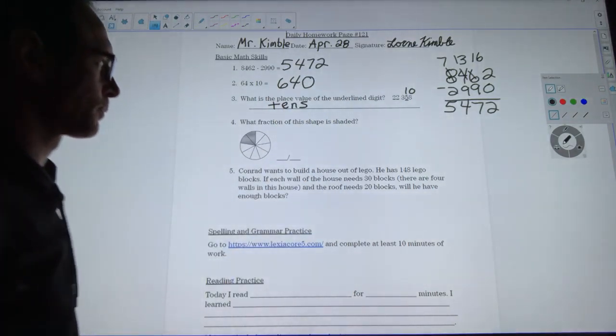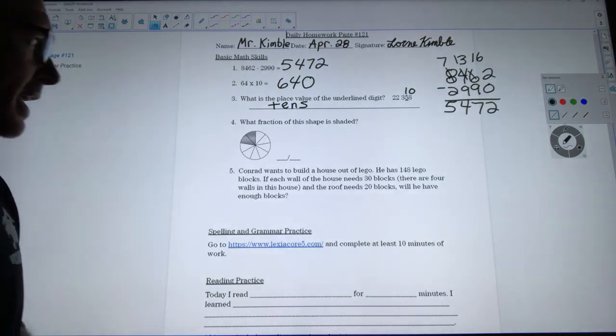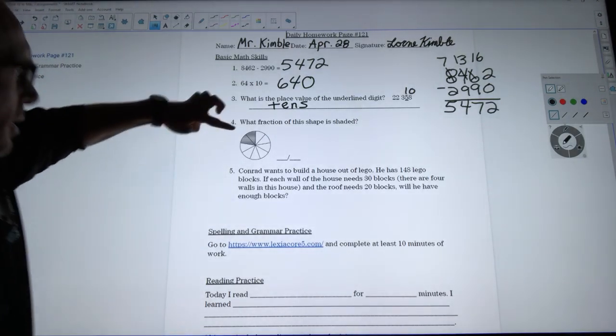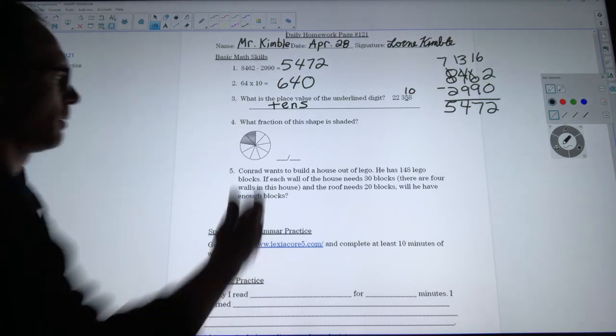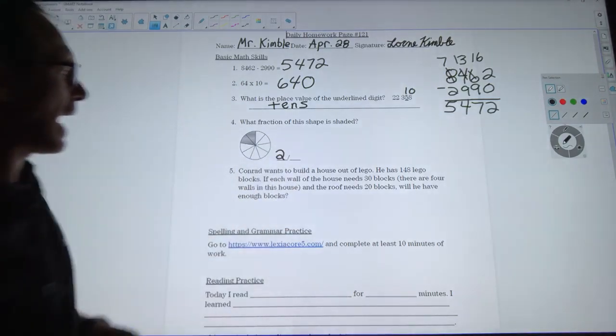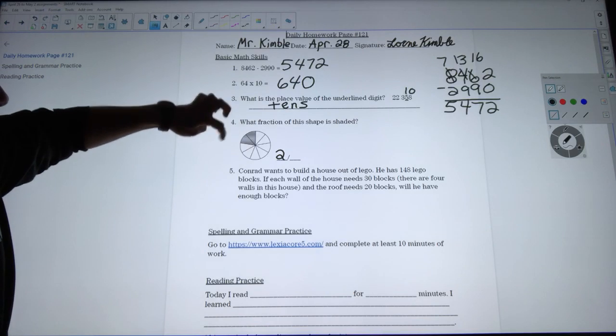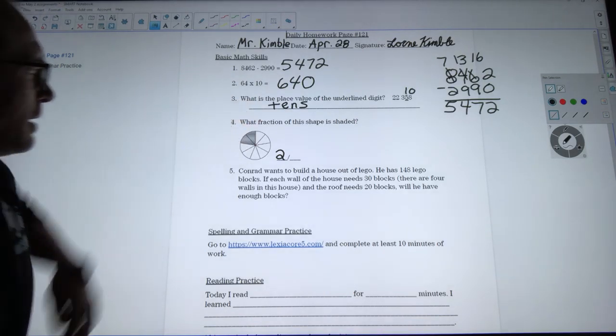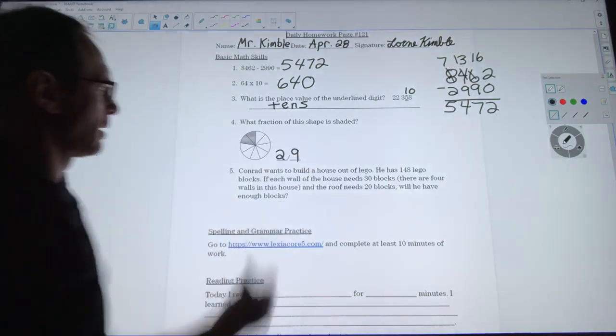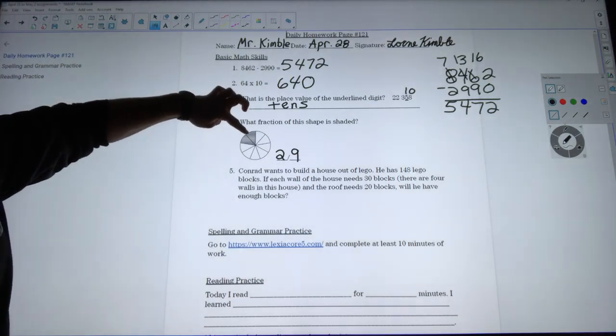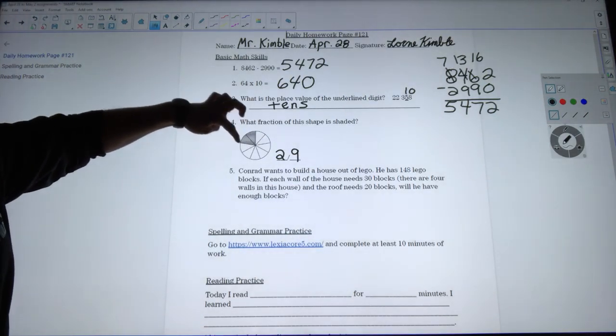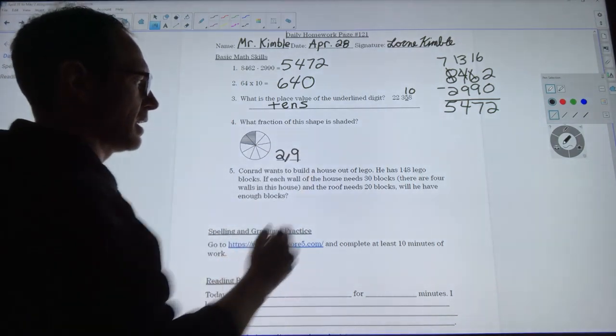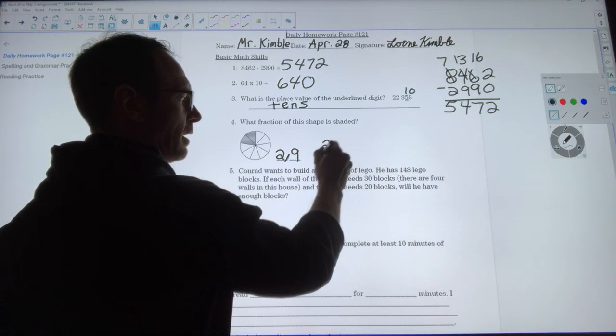This question is similar to yesterday's math. It says what fraction of this shape is shaded, so you can see that there are two parts that are shaded in out of the total number of parts which is one two three four five six seven eight nine. I'm right with that, right? One two three four five six seven eight nine, yes. So two ninths of the shape is shaded in.